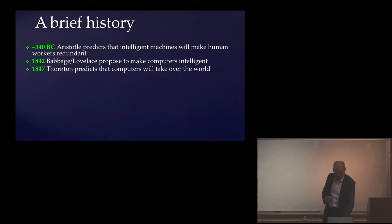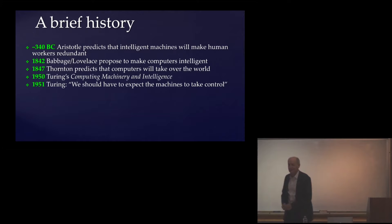And then we had to wait another hundred years for there to be actual computers, thanks to World War II. And Alan Turing is famous for this paper, the paper that has the Turing test from 1950. What's less well known is that he also talked about what would happen if we actually achieved human-level AI, and he was completely resigned. He said we should have to expect the machines to take control.